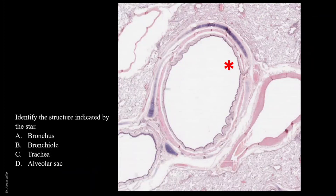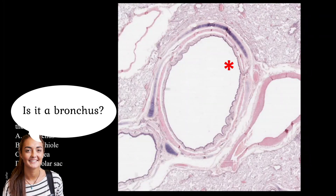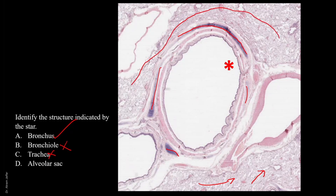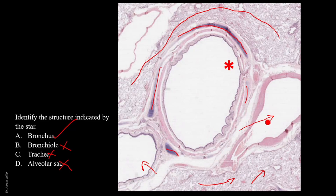Identify the structure indicated by the star. It's a bronchus — not a bronchiole because I can see cartilage plates, multiple of them. It is not a trachea because I can see alveoli of the lung, so I am inside the lung. It is not an alveolar sac — in the alveolar sac it doesn't look like this. It is a bronchus. This could be a bronchiole here, not very clear. And this structure could be a blood vessel, maybe a vein, but not very clear.